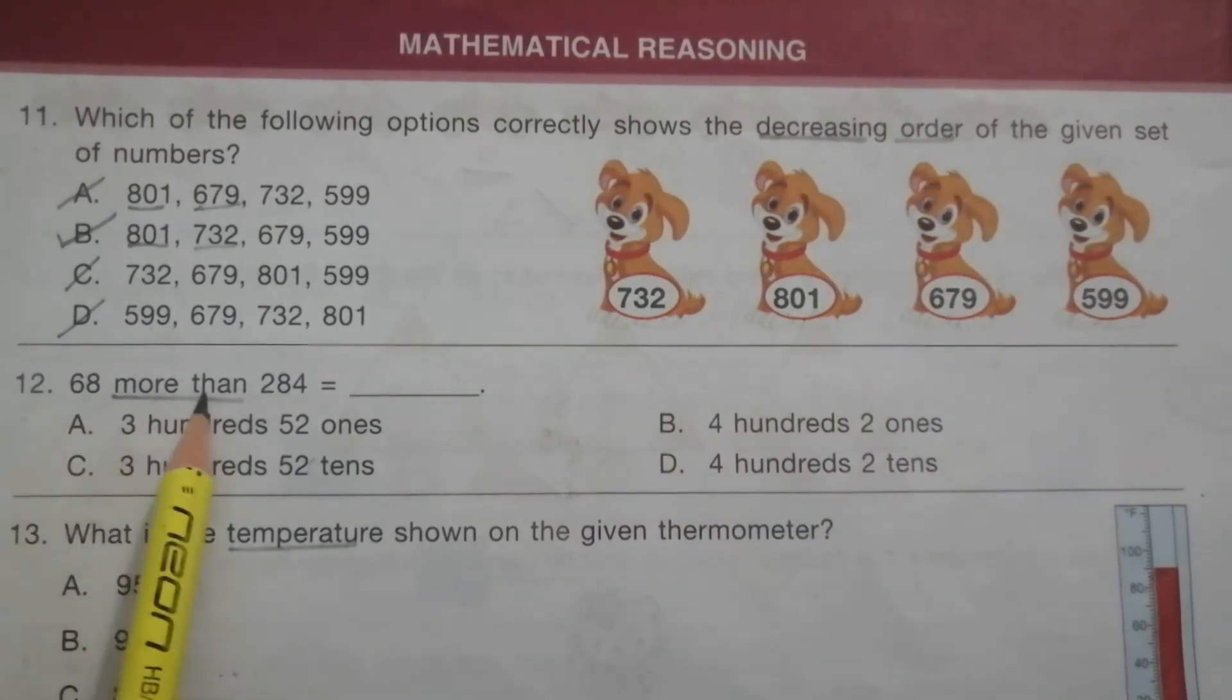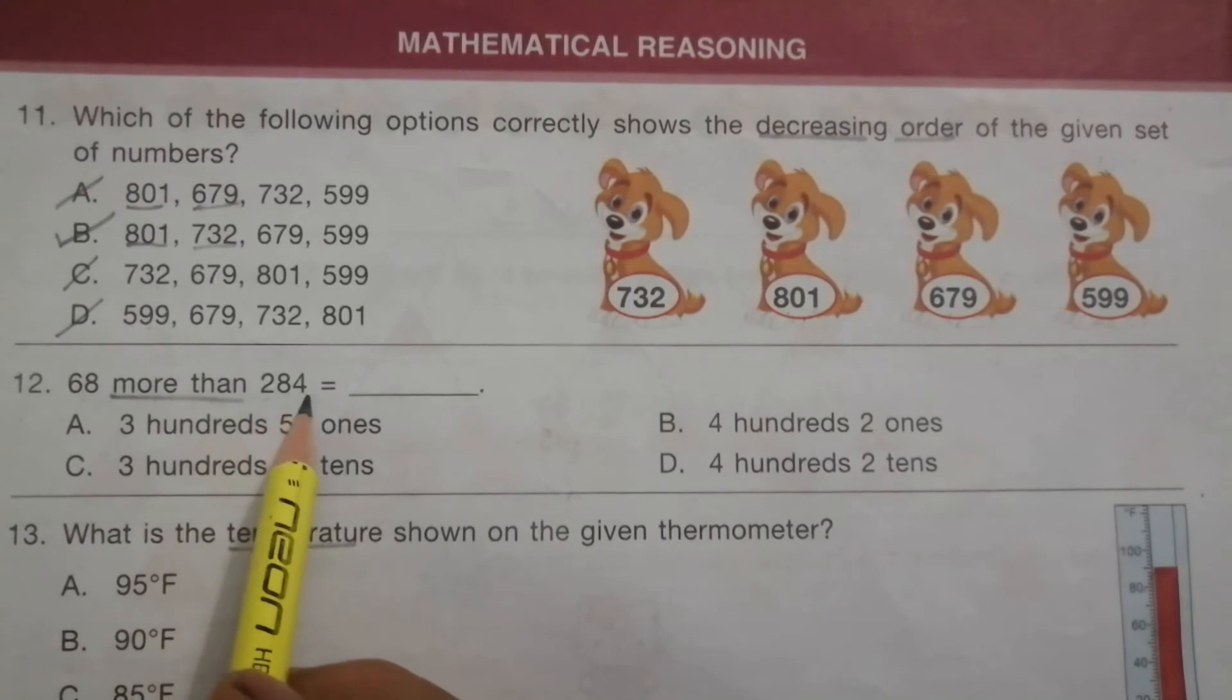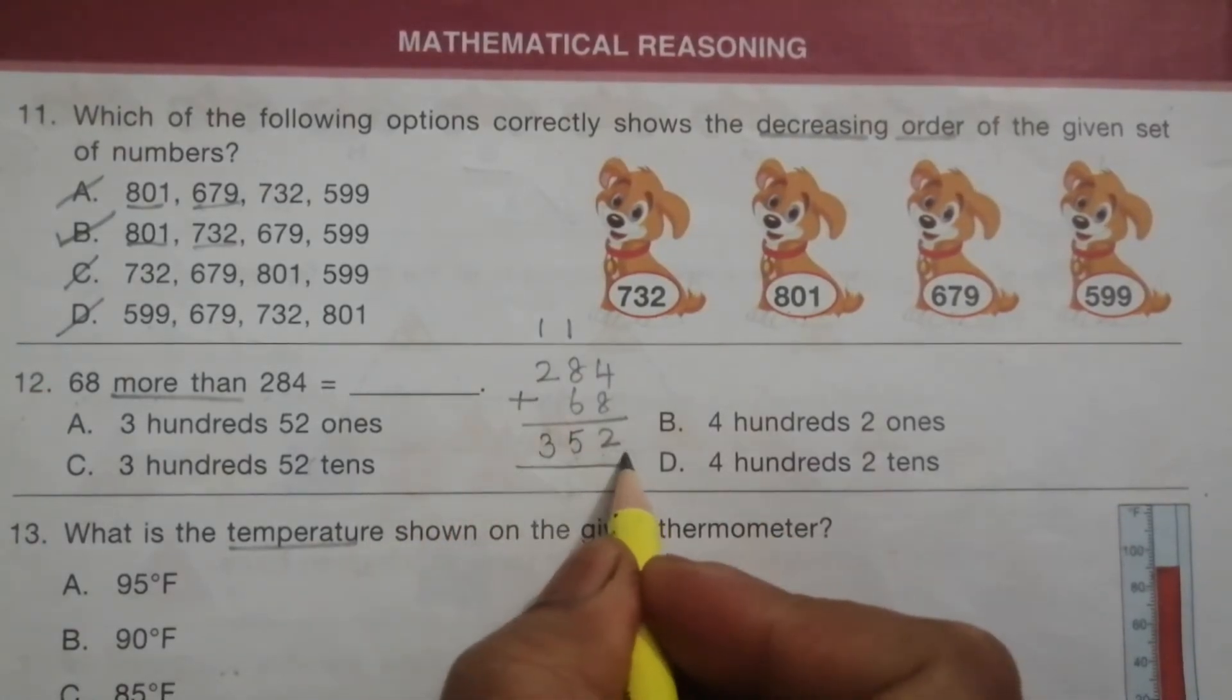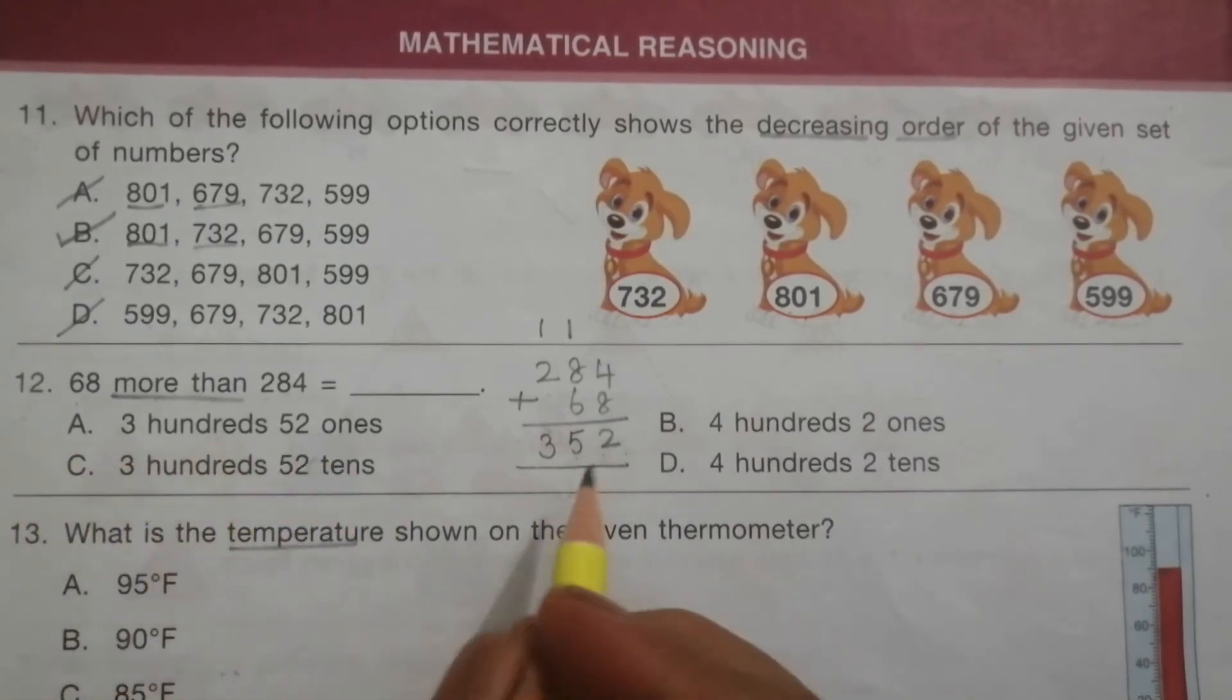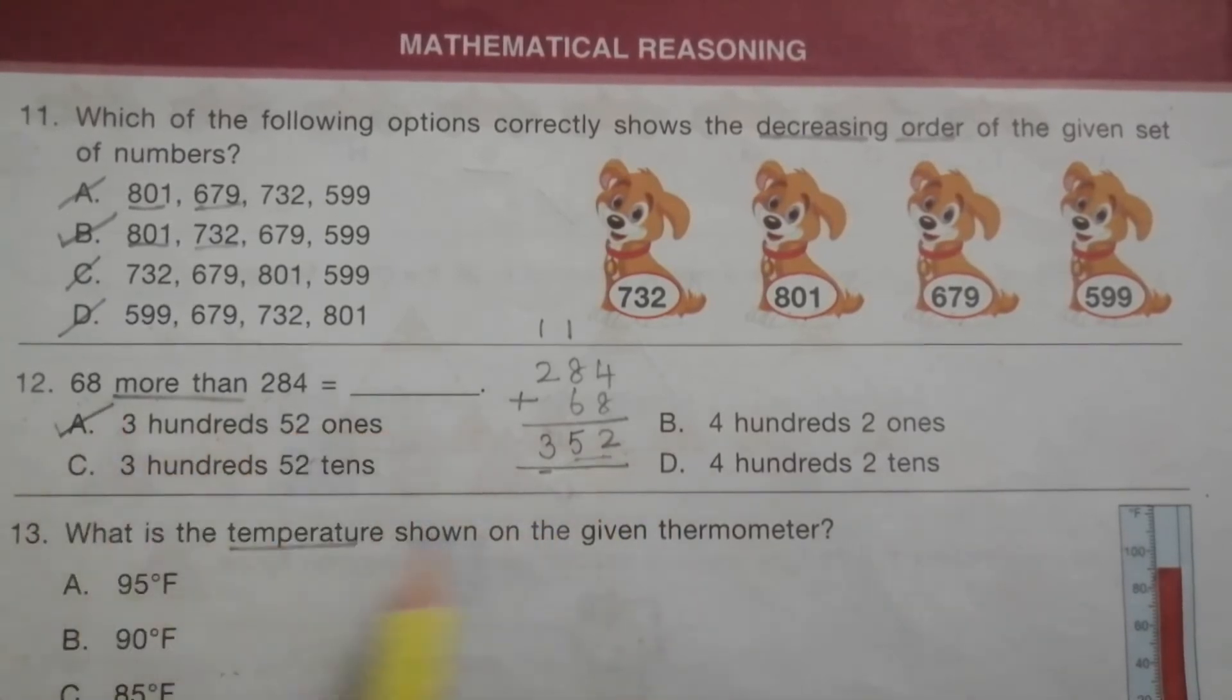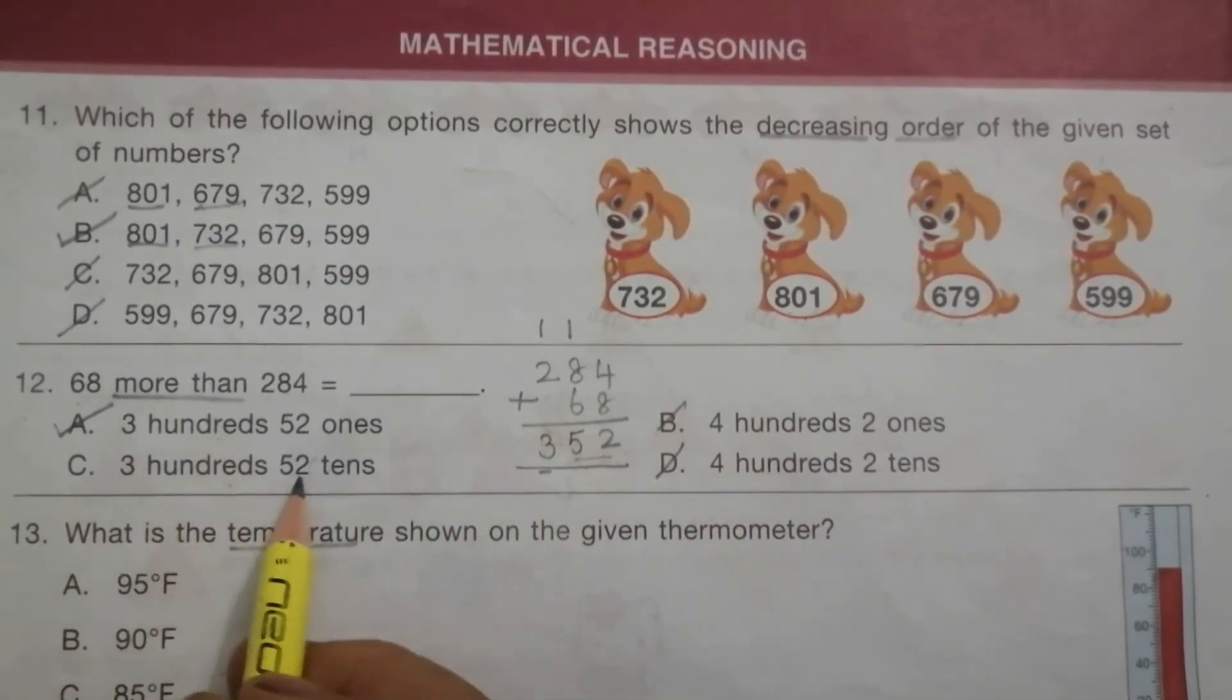Problem 12: 68 more than 284 equals what? That means we add 284 and 68. If we add these two, we get 352. In option A: three hundreds and 52 ones. Yes, three hundreds and 52 ones. This is the correct answer. B shows four hundreds, wrong. C shows three hundreds 52 tens - three hundreds is correct but 52 tens is wrong, it's 52 ones.